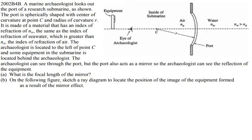The first question asks: what is the focal length of the mirror? The focal length is half the radius of curvature. So if the radius of curvature is R, then the focal length is R/2. The given information includes the radius R, the index of refraction N of the material the mirror is made of, and N of air.